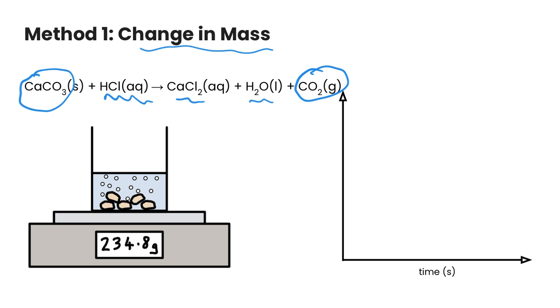Because we're creating a gas, the mass is going to decrease over time. So we can measure the loss of mass in grams over time, and so that's going to start out high and then it's going to decrease down somewhere like that.